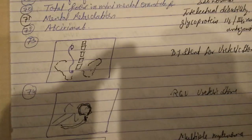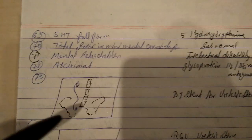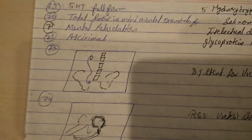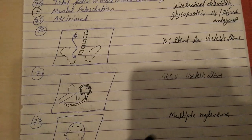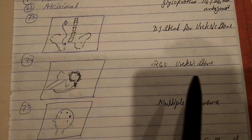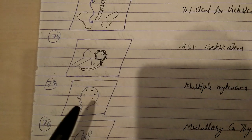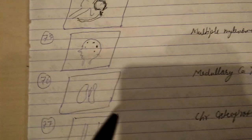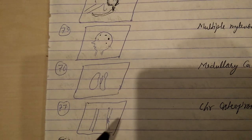We see an X-ray image showing a DJ stent placed to clear the urinary tract for 15 days — this is RGU, retrograde urethrography, for ureteric stones. We also see some calcification on a skull, which is seen in multiple myeloma. A picture of medullary carcinoma of thyroid is shown, and post-injury bone appearance is due to chronic osteomyelitis.